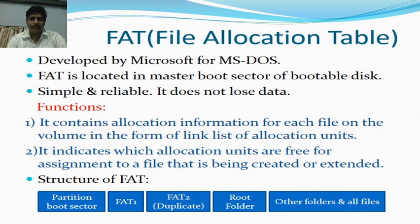In the following figure, we can see the structure of the FAT. The first space is allocated for the partition boot sector information. Next is FAT1, then FAT2, which is the duplicate copy of FAT1. After FAT2, space is allocated for the root folder, and after the root folder, the remaining space is used for other folders and all files.